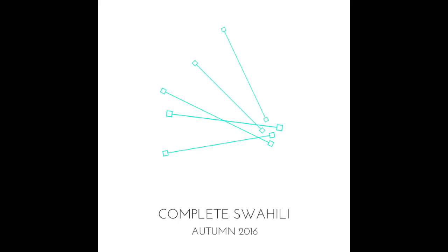We've seen that we can add a bunch of stuff at the beginning of a verb to give information about who or what is doing it, to who or what it is being done, and when. In Swahili, we don't just have the resource of adding to the beginning of verbs, but also to the end of them too. So when we add on to the beginning of the verb, we are giving information about who or what is involved and when. When we add on to the end of the verb, we alter the verb's actual meaning.